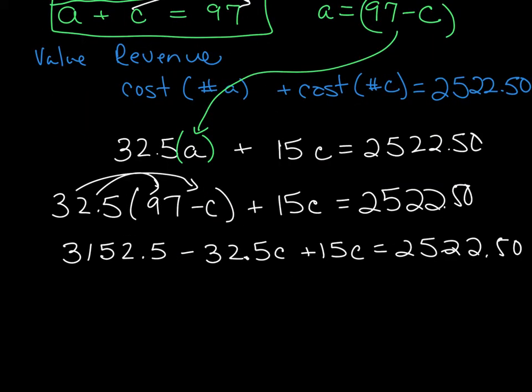So I just went through and distributed the $32.50 to both of these pieces. Now you want to go ahead and combine our like terms here. So this is a negative 32.5 plus 15, which leaves us with a negative 17.5 for C.